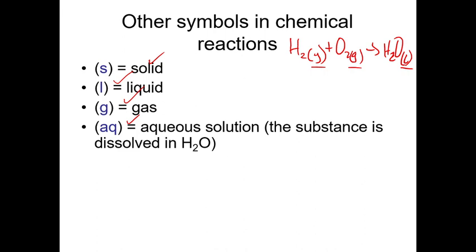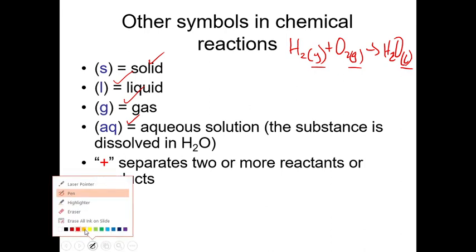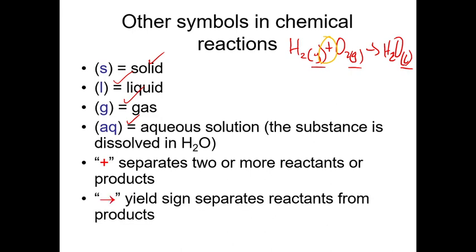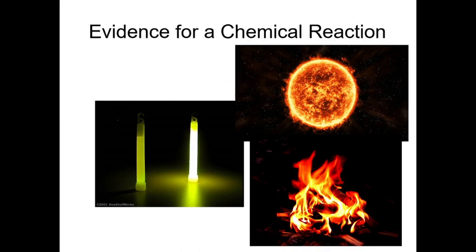The plus sign separates two or more reactants or products, and the yield sign — the arrow — separates the reactants from the products.